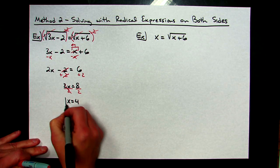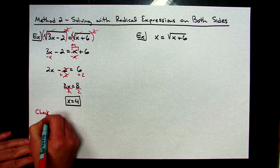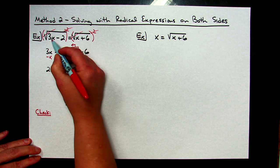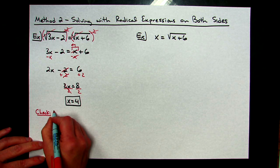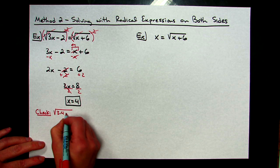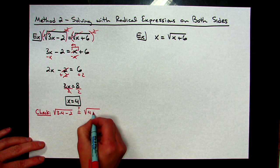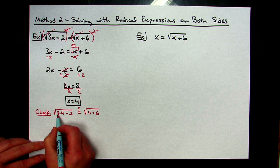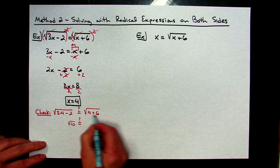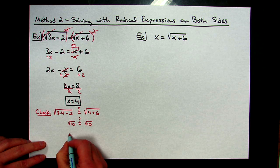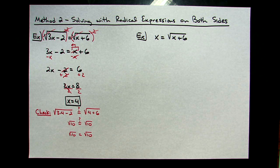Now here again, you need to run a check to see if this really works. Checking x equals four — you have an x on both sides of the equal sign, so plug it into both places. Is the square root of three times four minus two equal to the square root of four plus six? Three times four is 12, minus two gives me radical 10. And four plus six gives square root of 10. Square root 10 equals square root 10 — it worked. That's a solution.